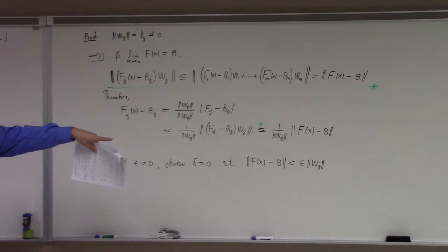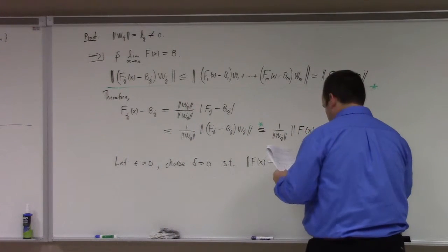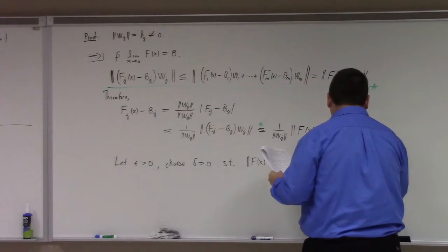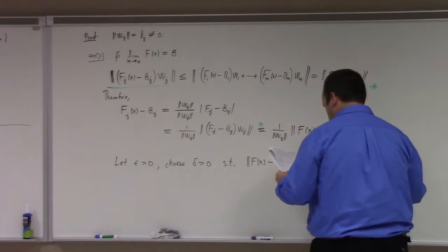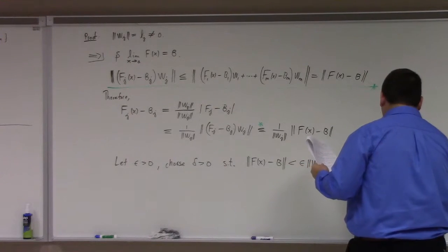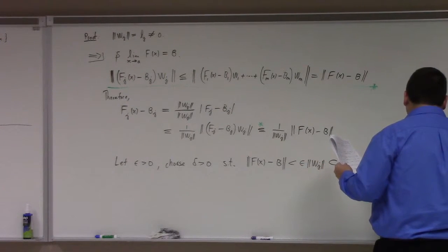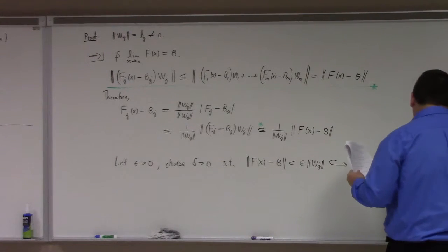That means I can make it as close as I want to be by choosing delta sufficiently small. In particular, I can make it with an epsilon times l sub j, the length of the jth vector. And if I do that, that then says that if you have 0 less than the norm of x minus a less than delta, well, that implies that the norm of f, the absolute value, rather, of f sub j minus b sub j of x